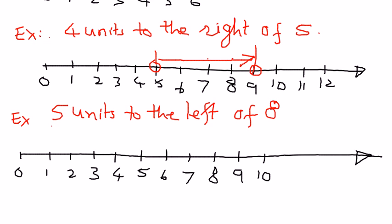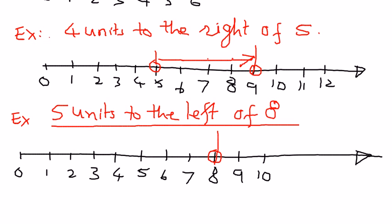The problem is we want to represent 5 units to the left of 8. We identify 8 on the number line, and then we move 5 units to the left, moving towards the 0 point. So we count 5 units from here: 1, 2, 3, 4, 5.